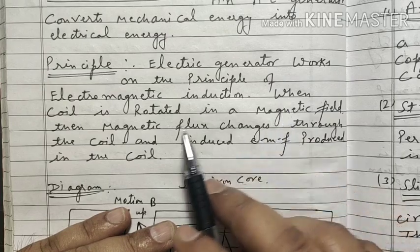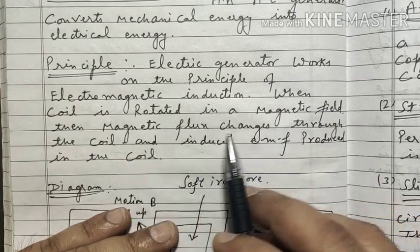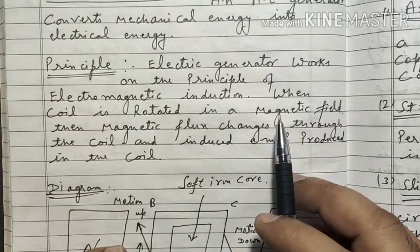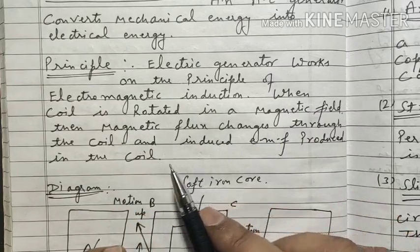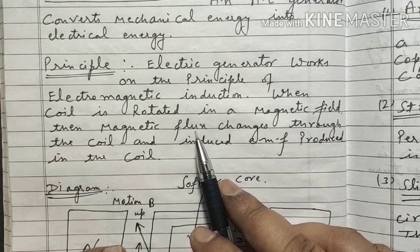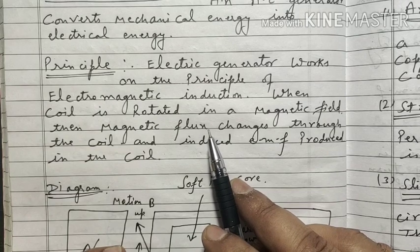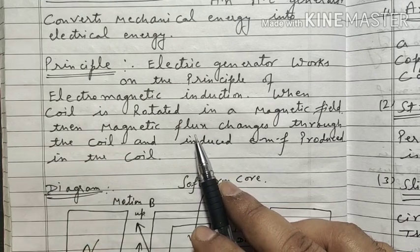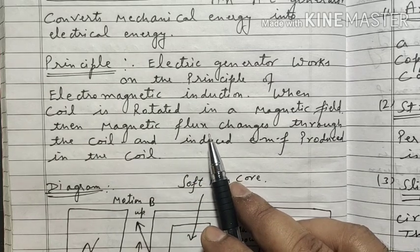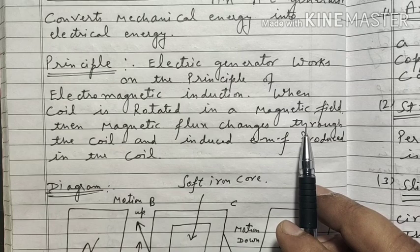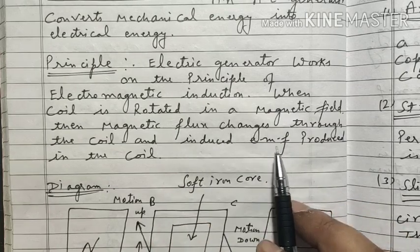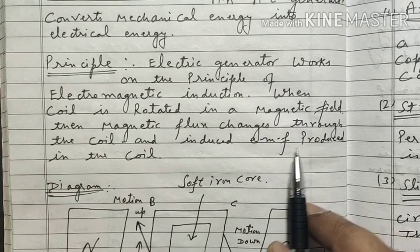Whenever the coil is rotated in a magnetic field — whether it's a circular coil or rectangular coil — when we rotate it in a magnetic field, the magnetic flux changes. Magnetic flux is basically the magnetic field, but we give it a new name: flux. As the magnetic flux changes with respect to time, the induced EMF is produced in the coil.